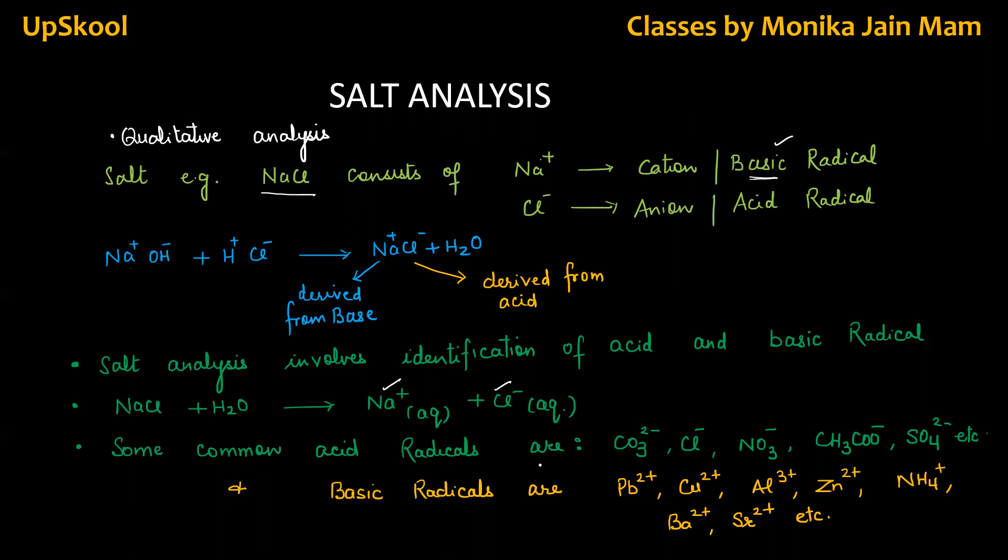The common acid radicals in plus 1, plus 2 for practical exams are carbonate, chloride, nitrate, acetate, sulfate. These are common. Besides that, there are many radicals like nitrite, sulfite, etc. Basic radicals are lead, copper, aluminium, zinc, ammonium, barium, strontium, etc. In the CBSE syllabus, only soluble salts are there in the course.